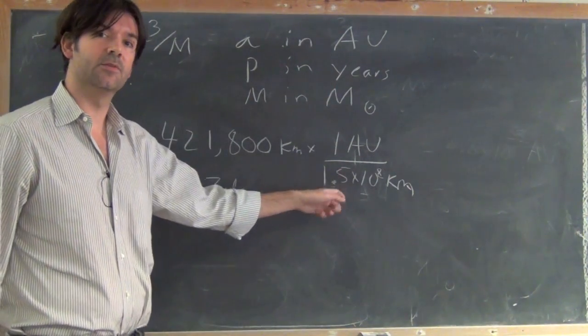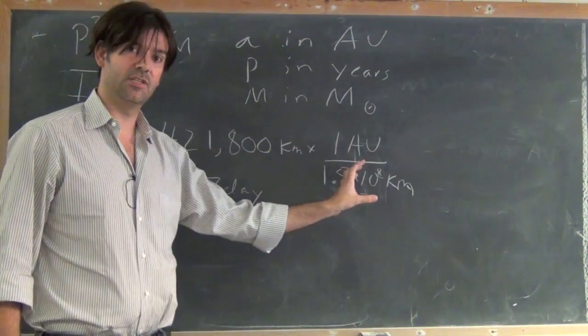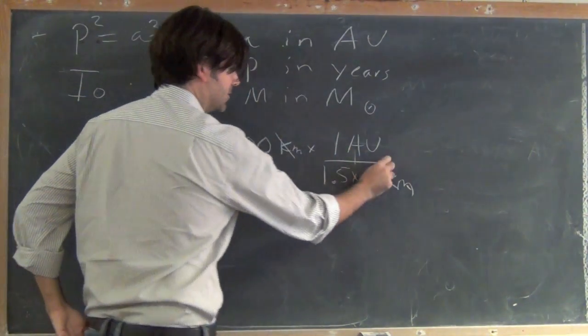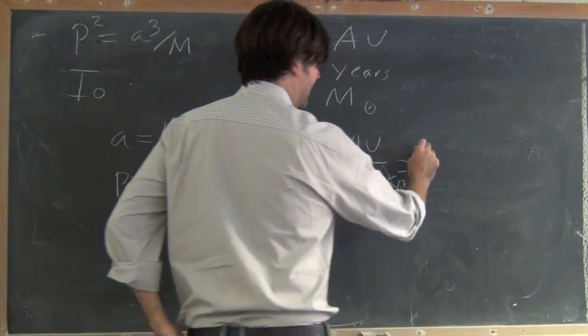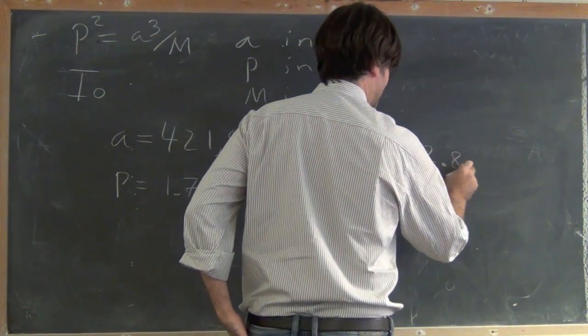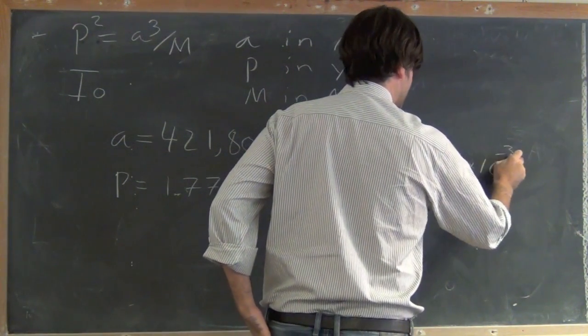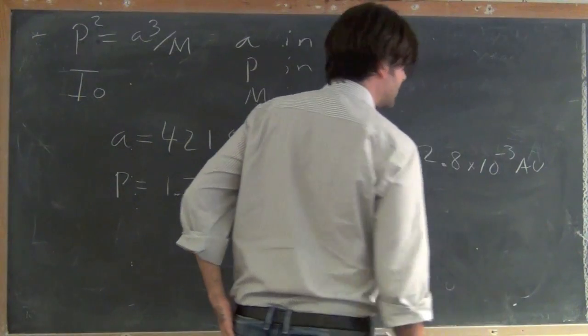Remember, I'm just multiplying by 1 here, so I'm not actually changing the value, I'm just changing its units. Cancel off those kilometers, and I get 2.8 times 10 to the minus 3 astronomical units.